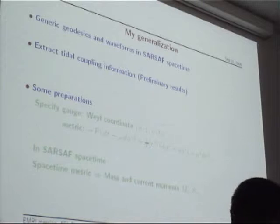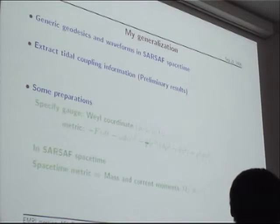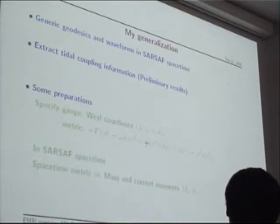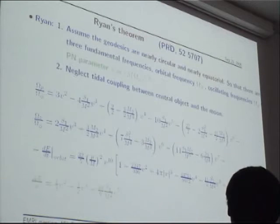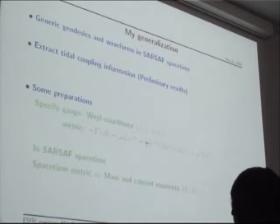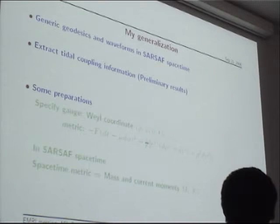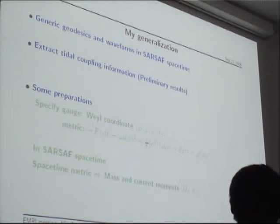My generalization of Ryan's theory lies in two aspects. First, I consider generic geodesics and waveforms in this spacetime — I try to abandon the nearly circular and nearly equatorial assumption. Second, I will try to extract the tidal coupling information between the moon and the central body. These are the two main generalizations.